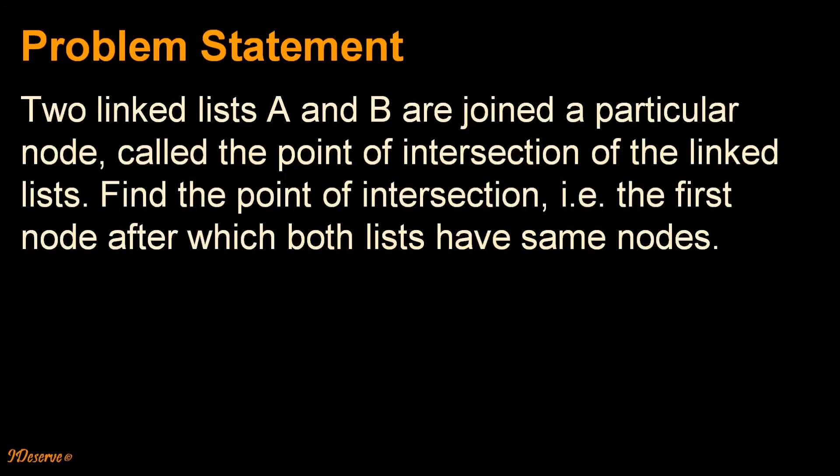The problem statement is two linked lists A and B are joined at a particular node called the point of intersection of the linked list. We have to find the point of intersection, that is the first node after which both lists have same nodes.